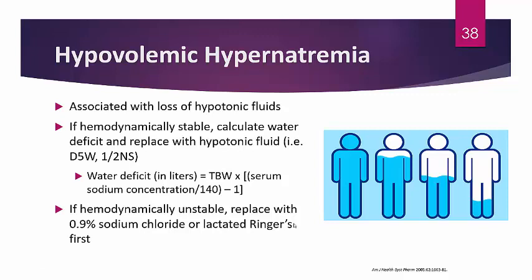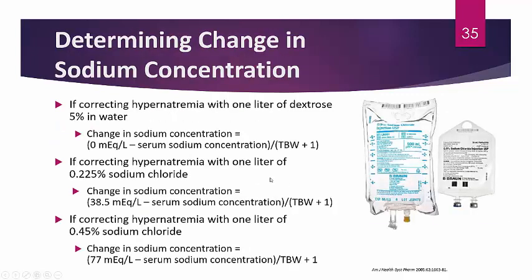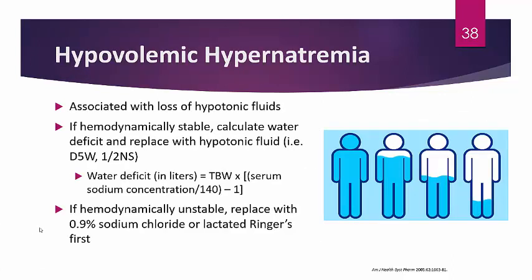Hypovolemic hypernatremia is associated with a loss of hypotonic fluids — essentially loss of free water like D5W — increasing sodium concentration. If hemodynamically stable, calculate the water deficit and replace with a hypotonic fluid. The water deficit formula: Water deficit (L) = TBW × [(serum sodium ÷ 140) − 1]. If hemodynamically unstable, always replace with an isotonic fluid first.